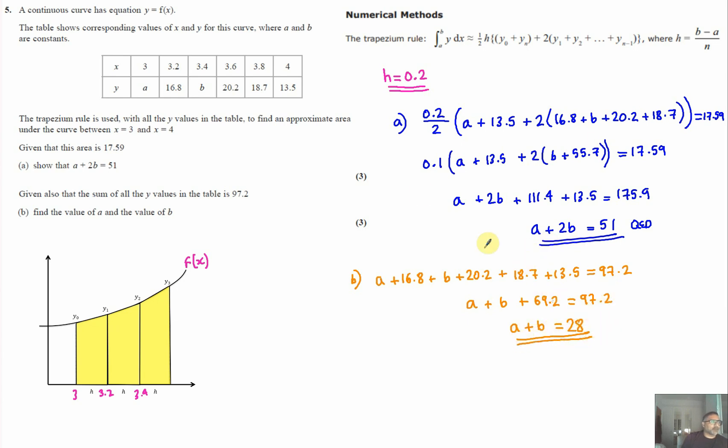Now we have two equations to solve simultaneously: a plus 2b equals 51 and a plus b equals 28. Subtracting these equations gives b equals 23. Substituting back, a plus 23 equals 28, so a equals 5.